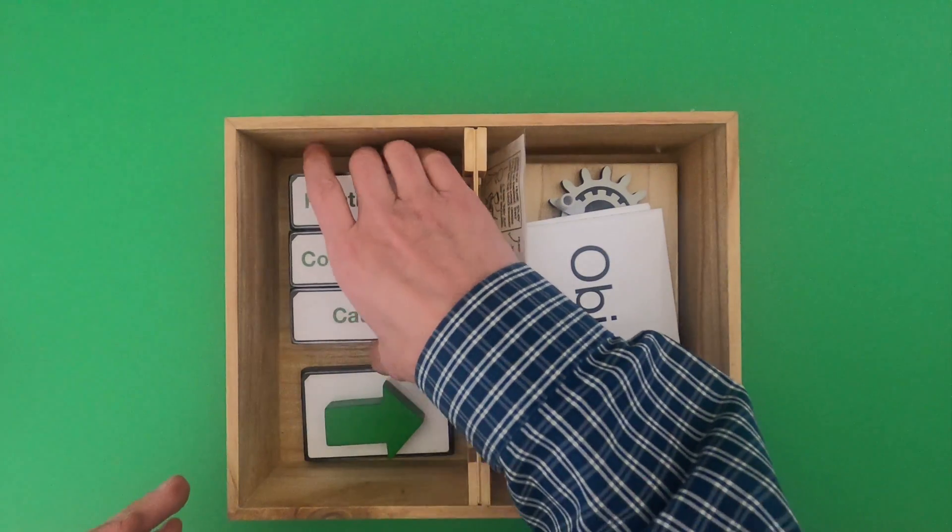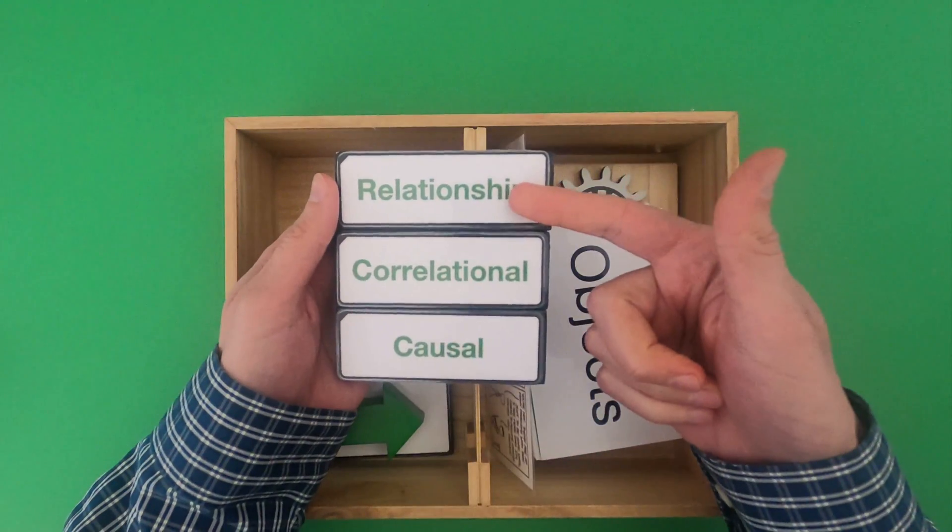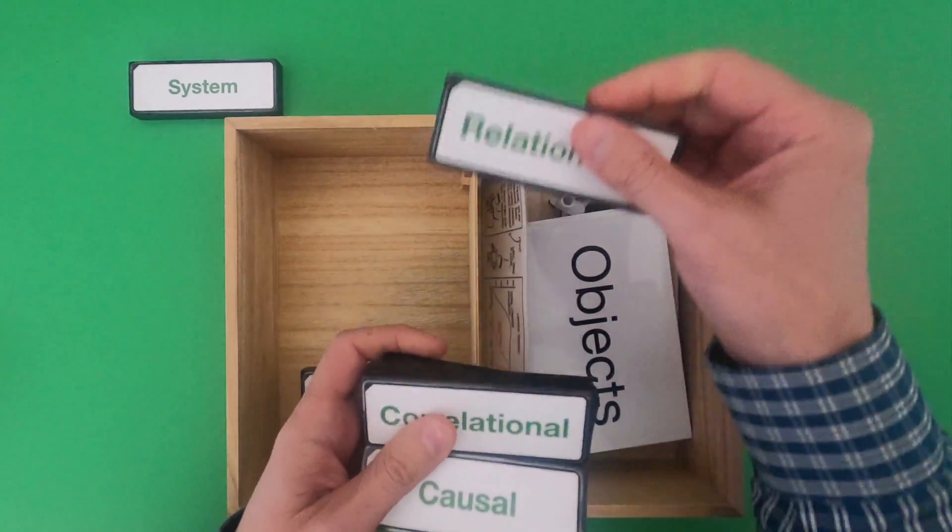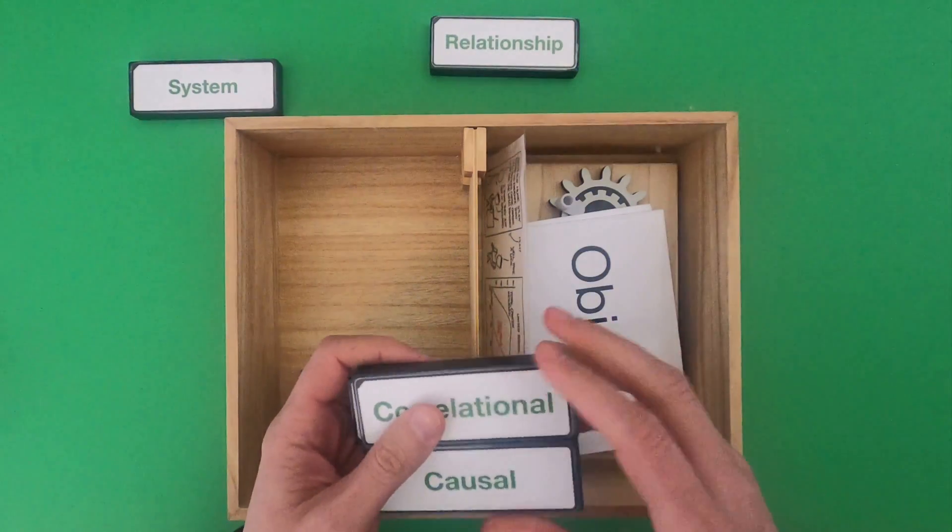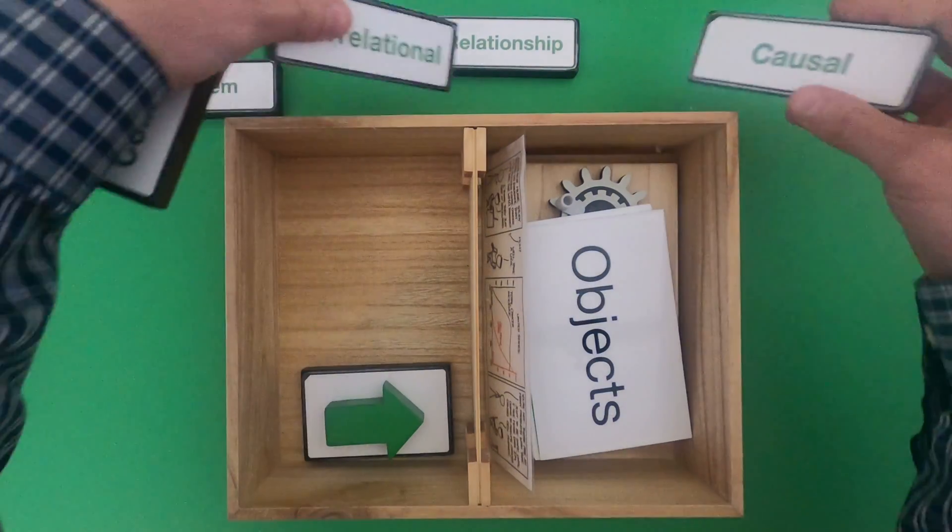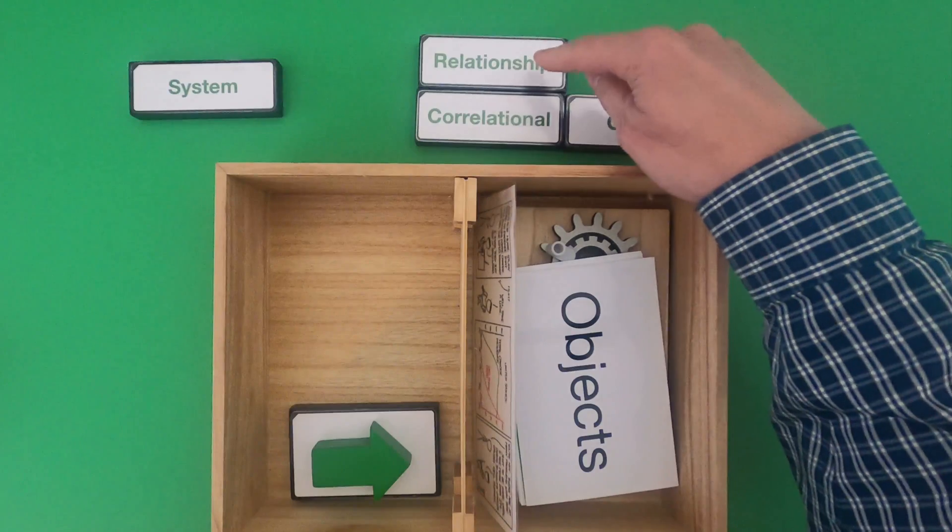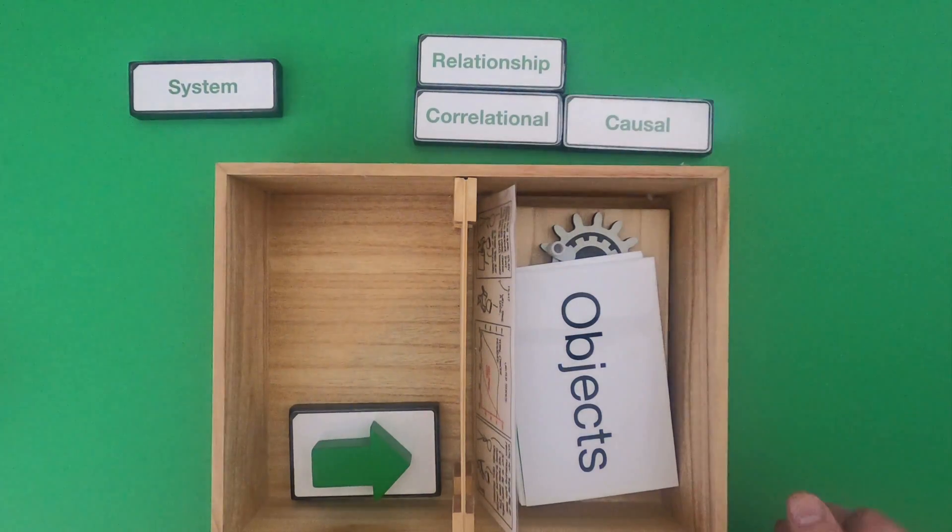In this video we're going to really be talking about relationships and identifying within a specific system are the relationships going to be correlational or causational. And so a famous example is if we look in the summer we see increases in both ice cream sales and drownings.